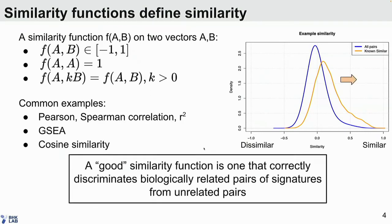A good similarity function — because there is a very vast space of these — is one that correctly discriminates related pairs of signatures from unrelated pairs. The only way to really assess this is if you have some sort of a-priori benchmark, where you know that pairs shown in orange are similar, and you expect that a good function will make this distribution of similarities different from the distribution of all pairs of signatures.